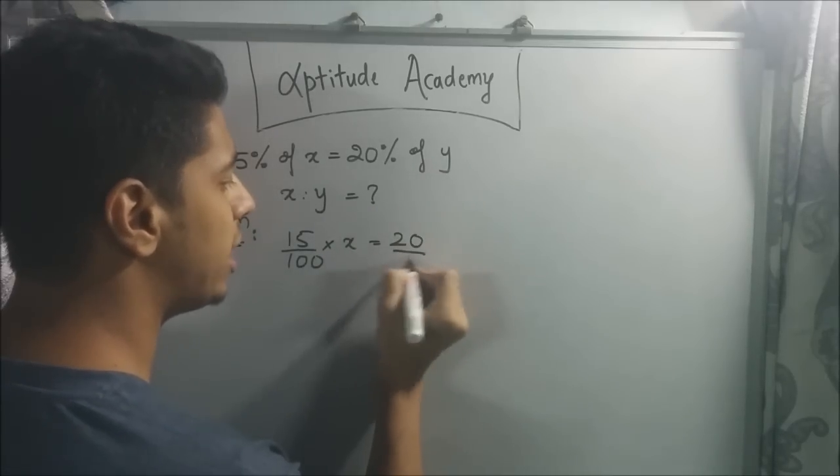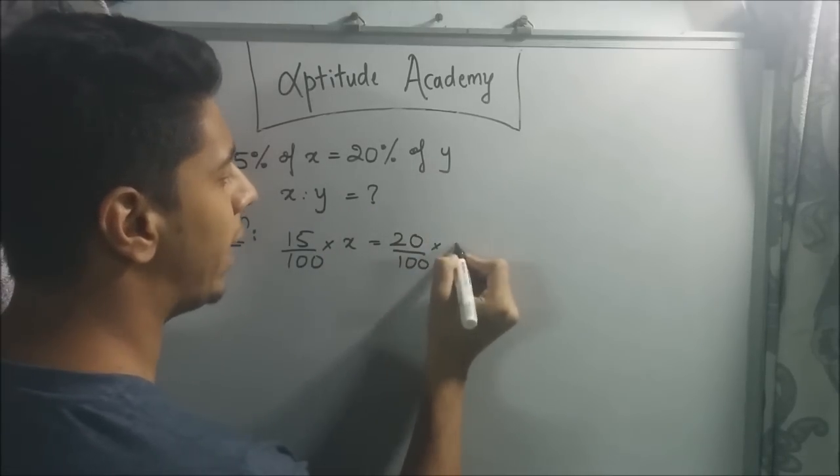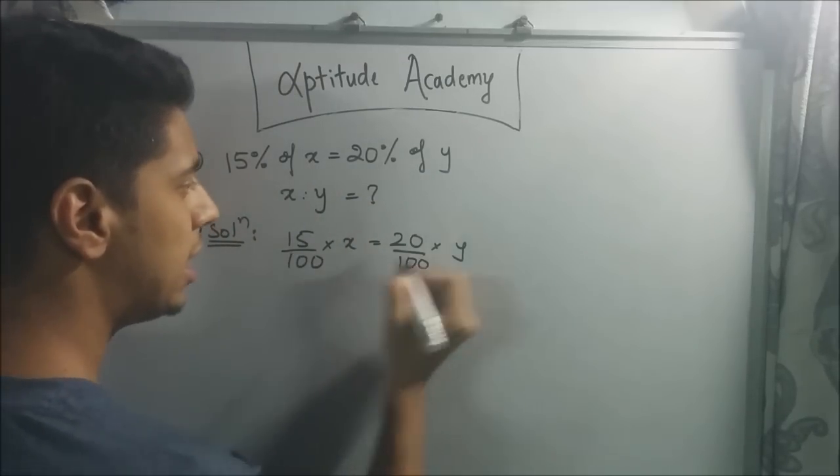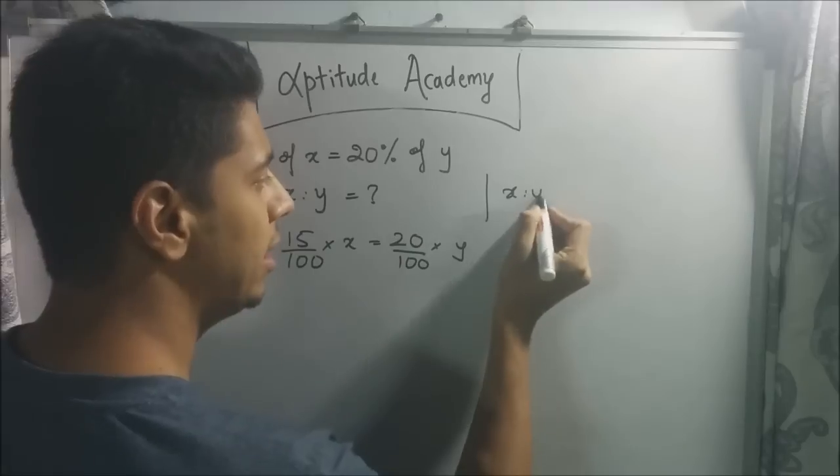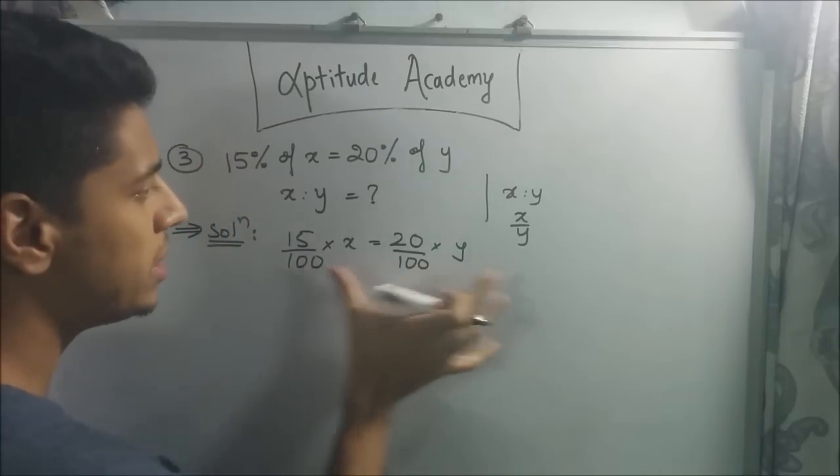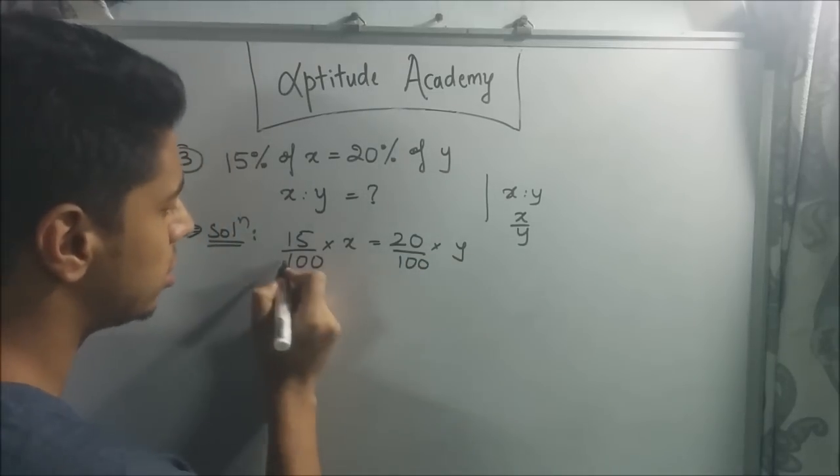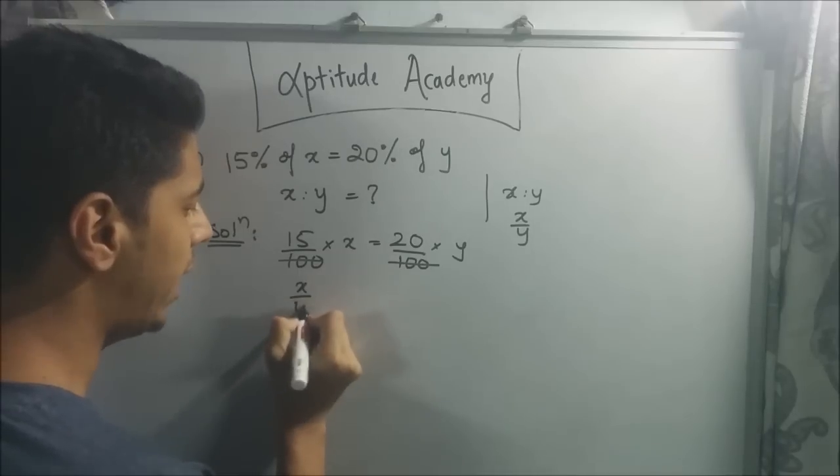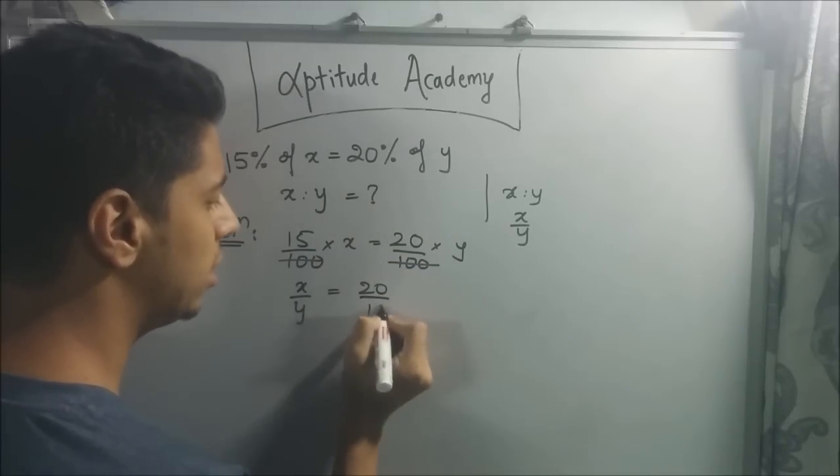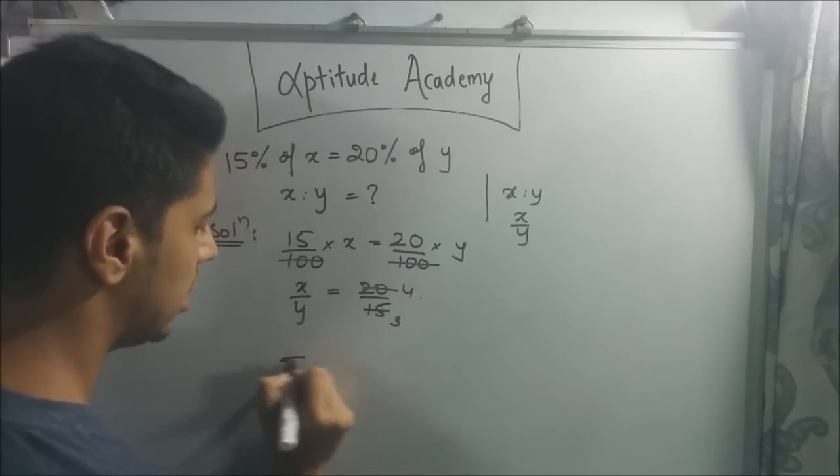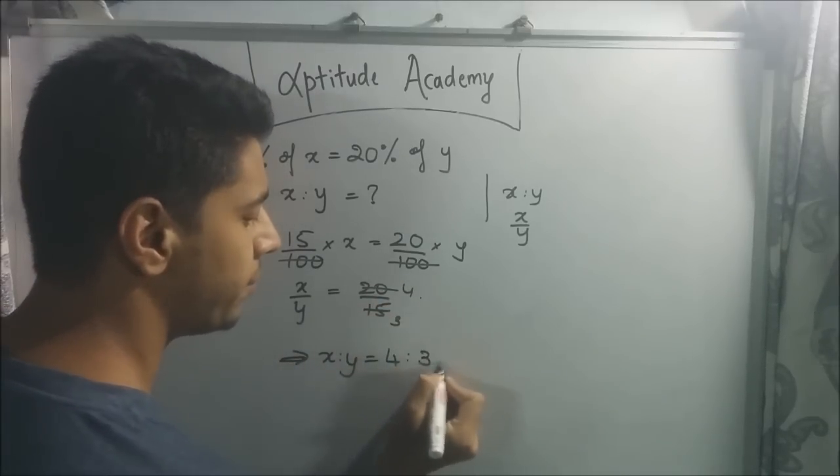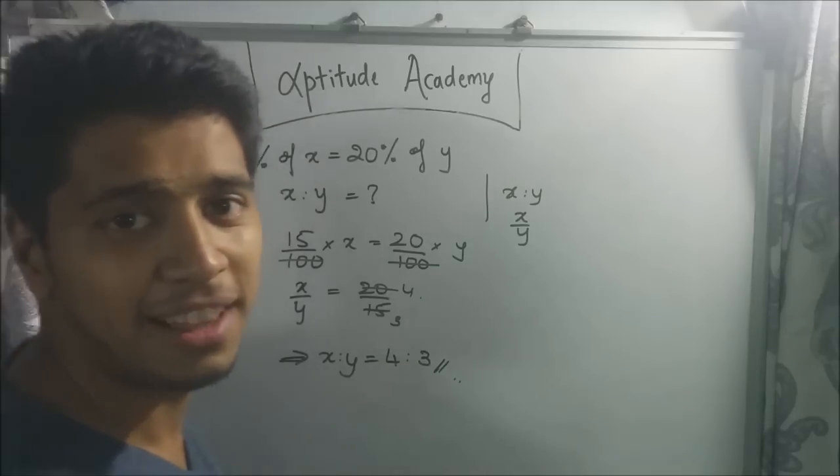Now what is the basic definition of a ratio? The basic definition is that x:y is in fact equal to x by y. That is the definition of a ratio. So we just need to find x by y. The 100 here and 100 here gets cancelled. So x by y, you take y down, 15 goes down here, so 20 over 15. 5 threes up, 5 fours up. This implies x:y equals 4:3. That's it.